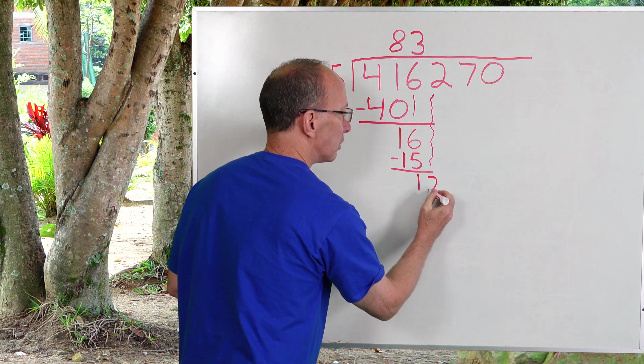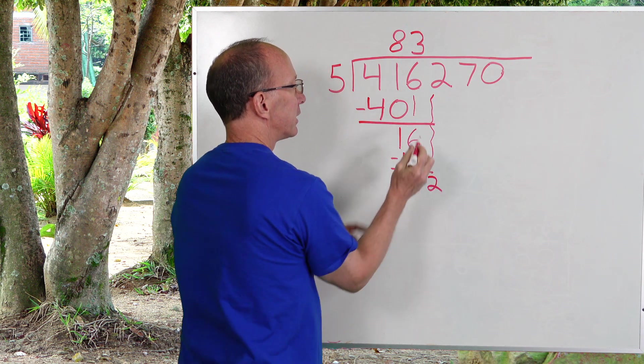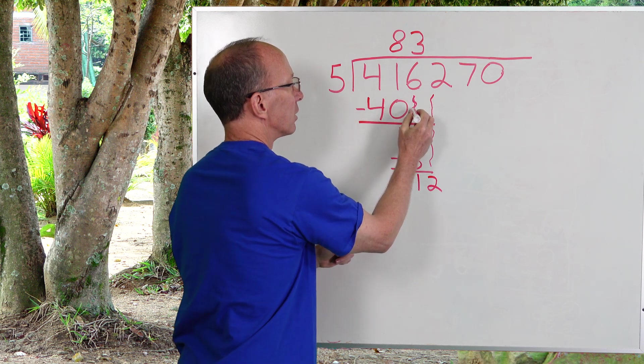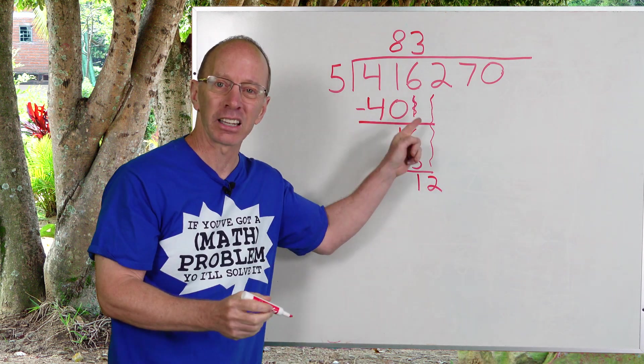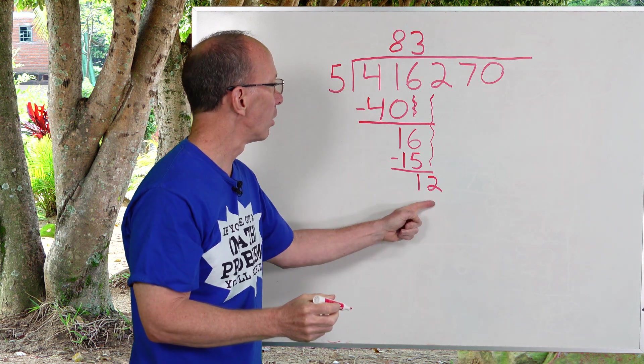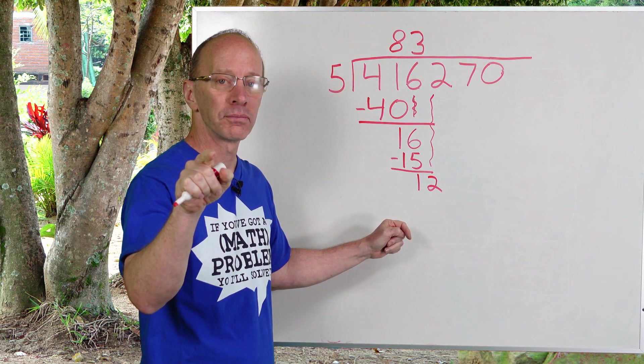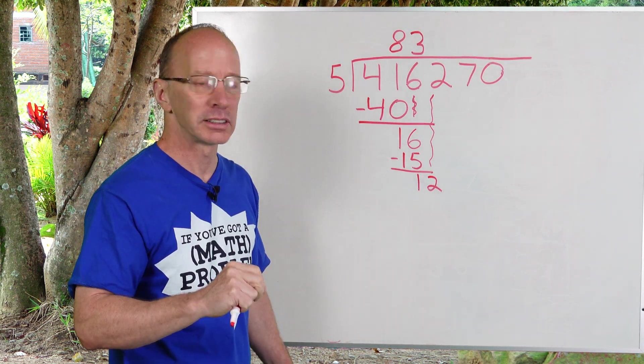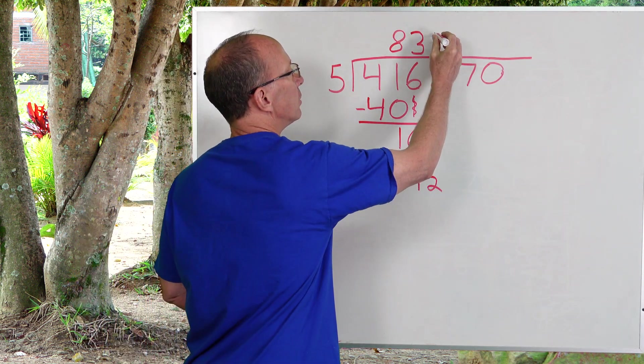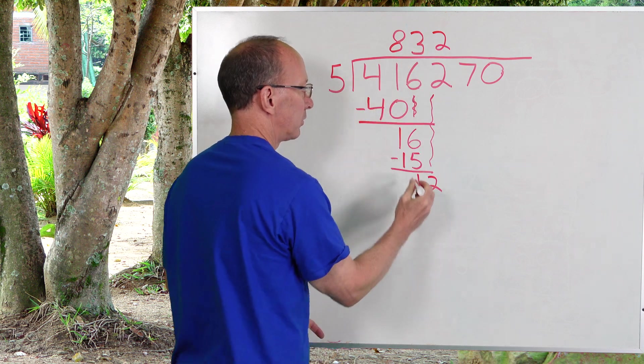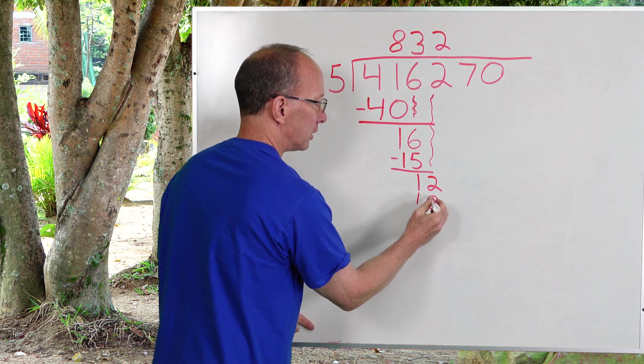Put the two right there. Now this kind of looked like a line, that should have been more of like a little squiggly line. I just don't want you to get that confused as a one. So now we have 12. How many times can I put 5 into 12? 5, 10, 2. Five times two is 10. So I put two right here. Two times five is 10. Here is our 10.